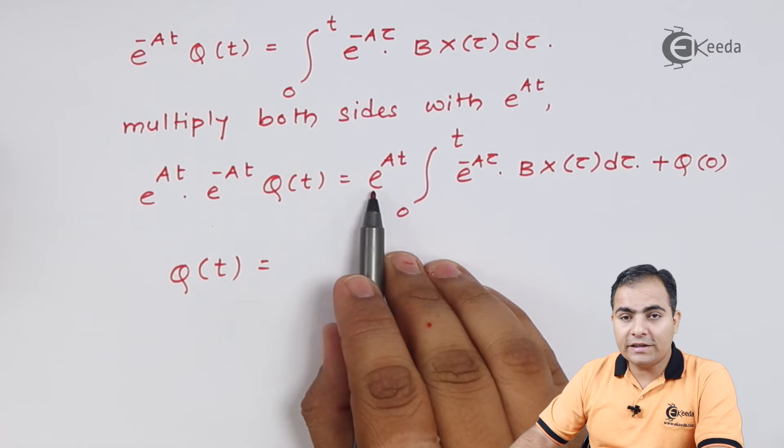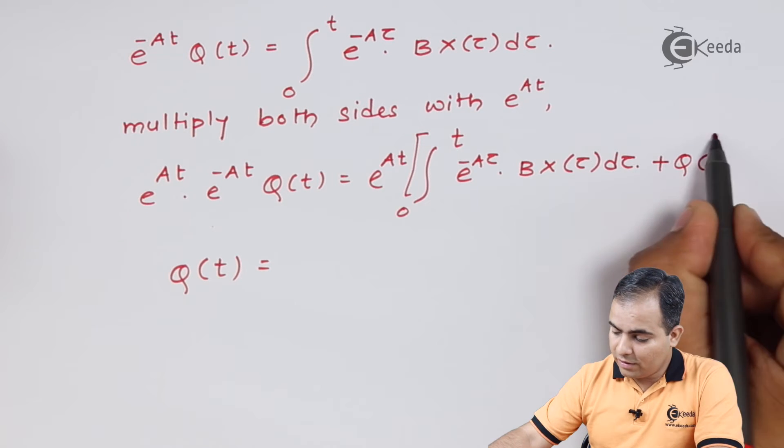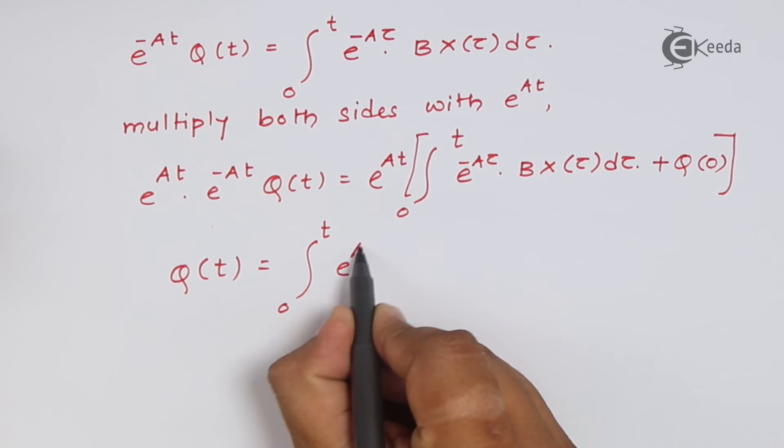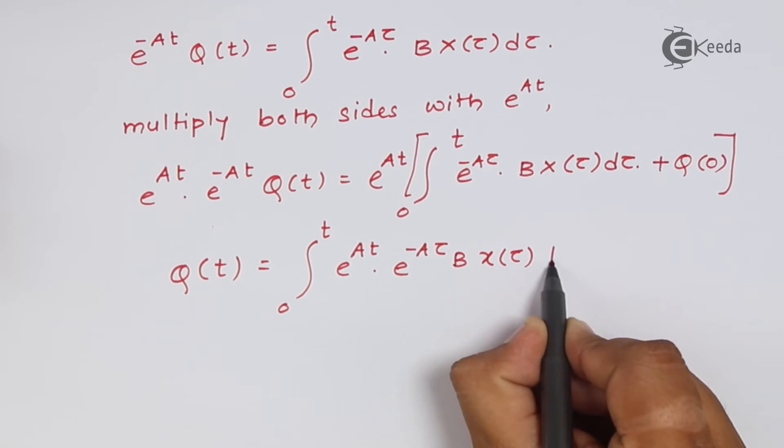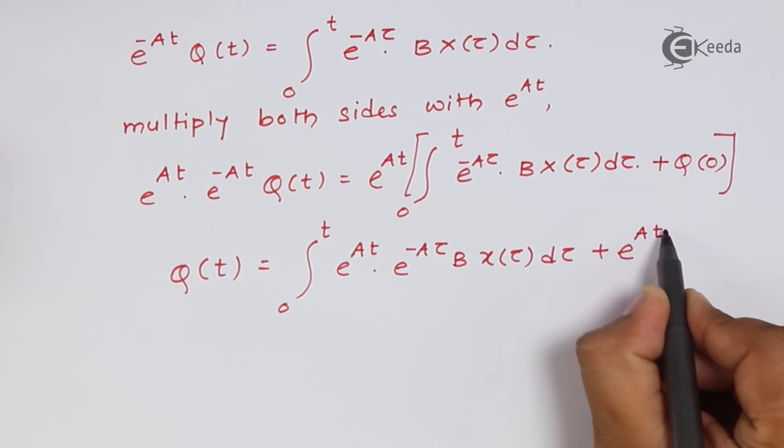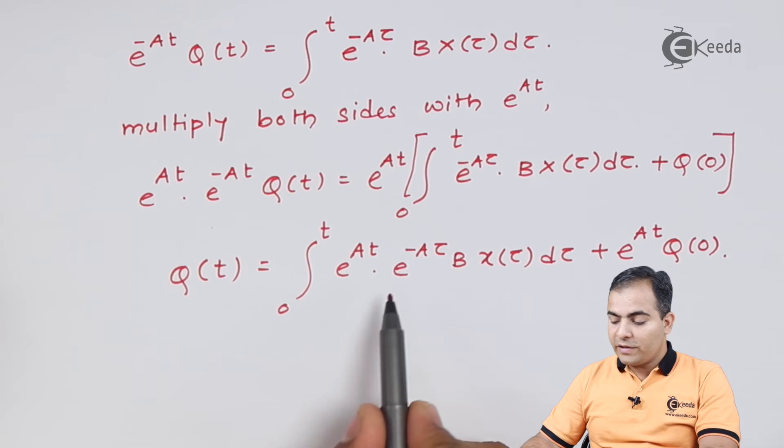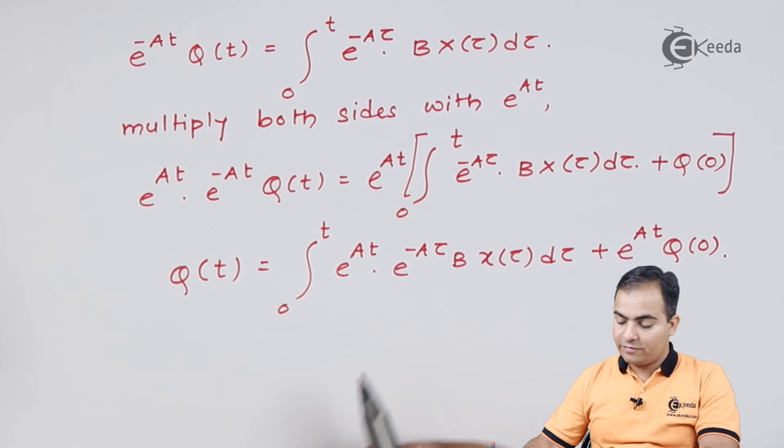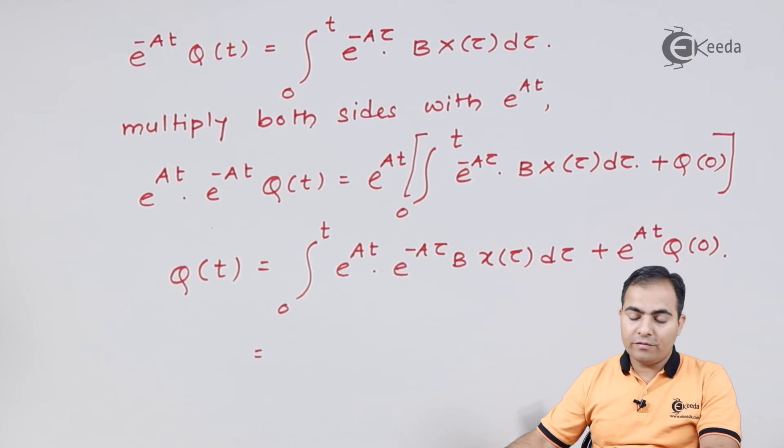And now I will multiply this e to the power At on whole right hand side or inside this bracket. Now look at here. Here also the bases are same, so we can add A(t minus tau). I will write this e to the power At q(0) value first.